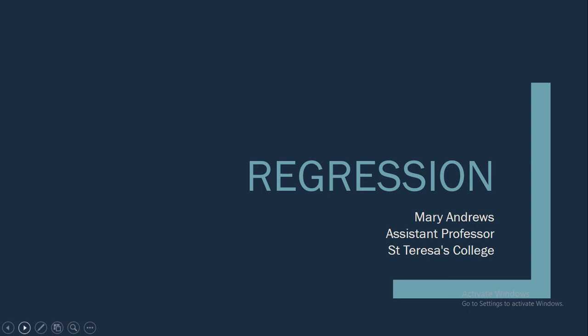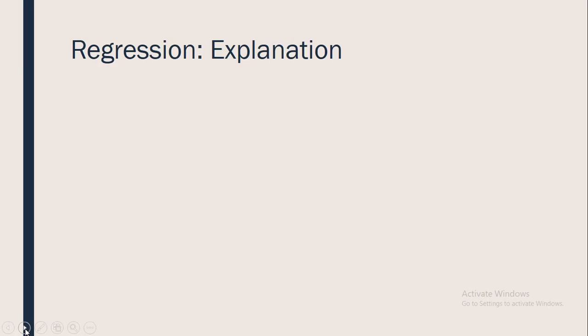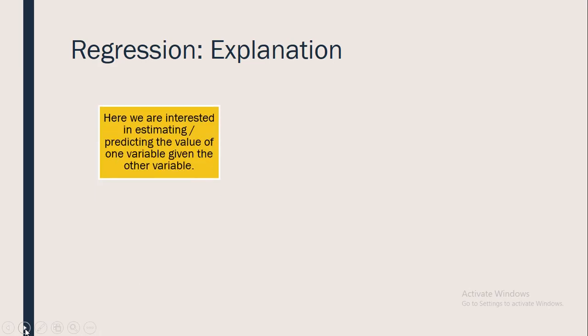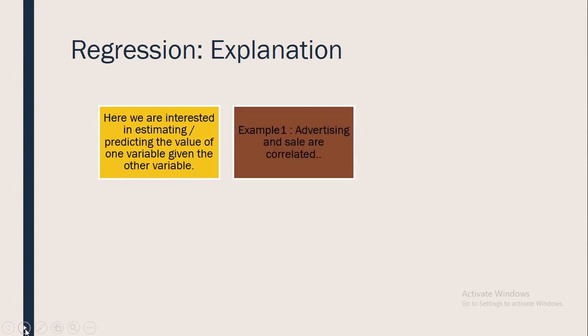Today we will learn about regression and regression analysis. I hope you have all understood correlation and the correlation coefficient, and what the statistical tool correlation is used for. Similarly, we have another statistical tool called regression. After having established that two variables are closely related, we may now be interested in estimating or predicting the value of one variable given the value of the other.